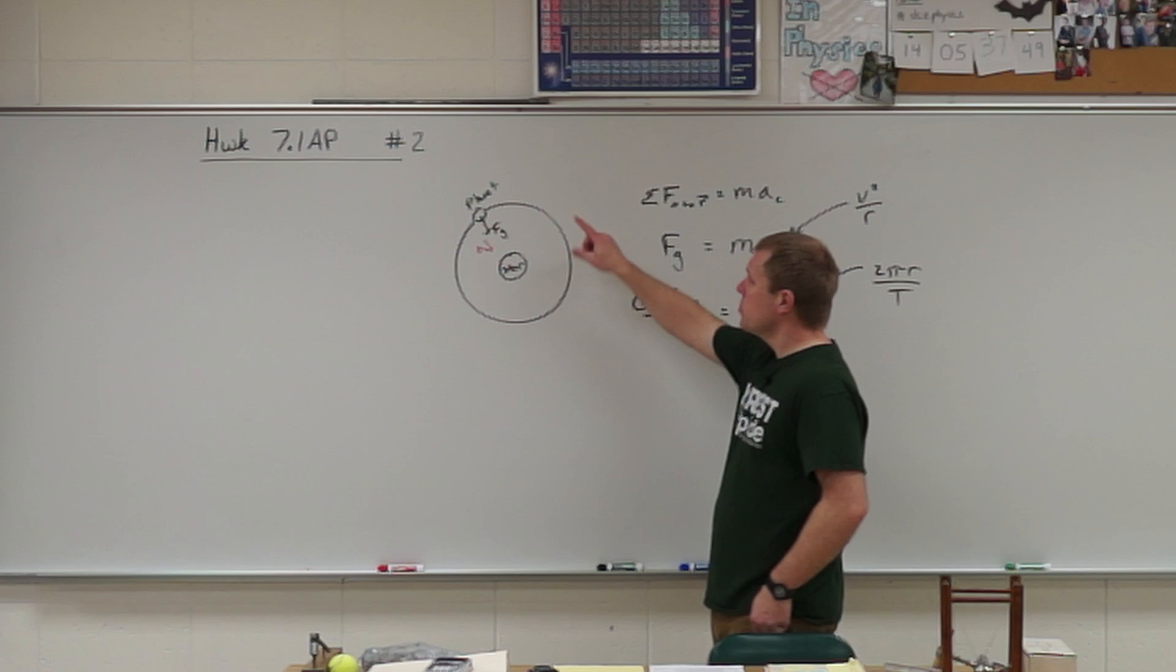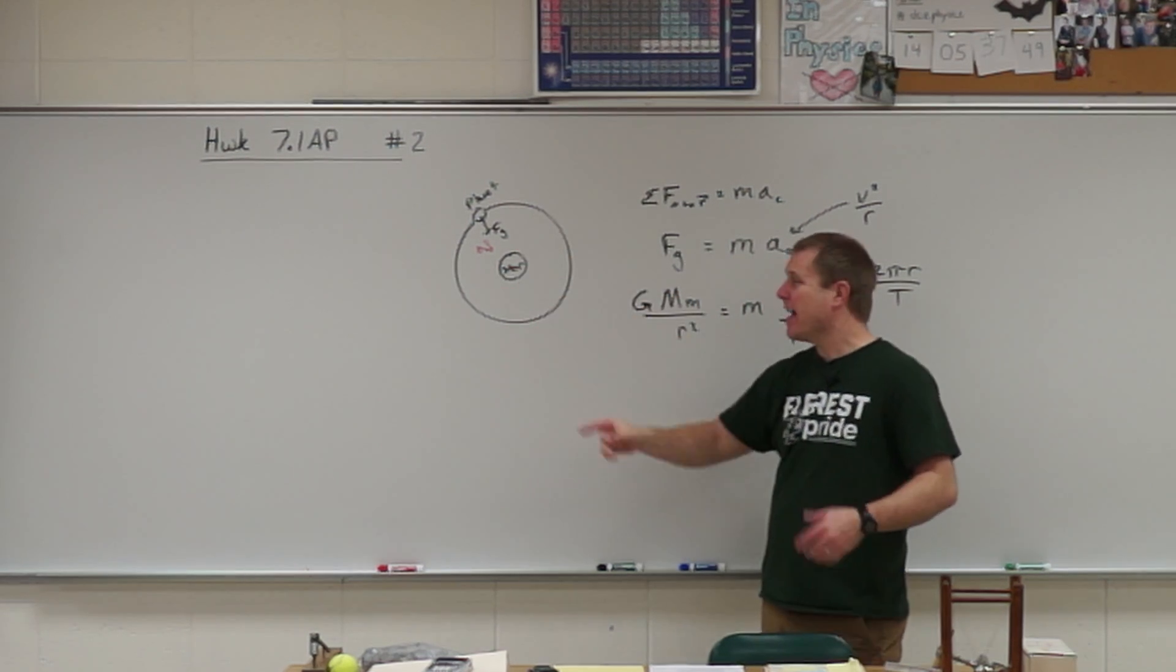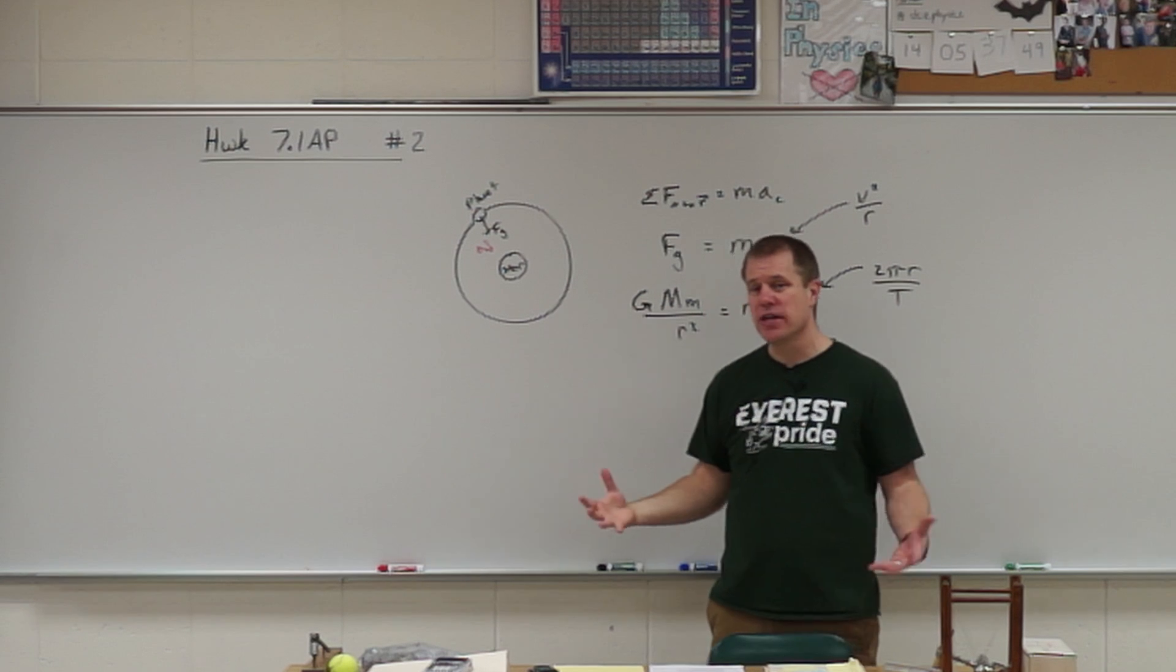Here's your hint for number two. So we have a planet orbiting a star and we want to figure out the mass of the star given that radius and that period of that planet.